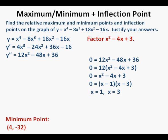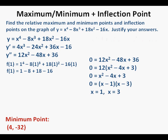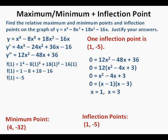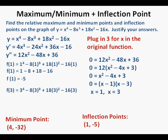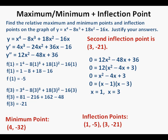We aren't being asked for concavity, but we are being asked for the points of inflection. So we plug x equals 1 into the original function: f(1) equals 1 minus 8 plus 18 minus 16, which gives f(1) equals negative 5. So one inflection point is at 1 comma negative 5. Next, to find our second inflection point, we find f(3): f(3) equals 81 minus 216 plus 162 minus 48, which gives f(3) equals negative 21. So our second inflection point is at 3 comma negative 21.